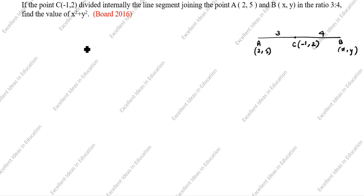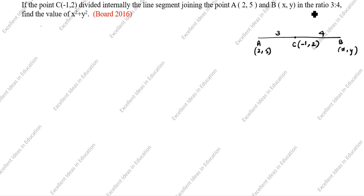Now we will find X² + Y². First we will find X and Y, and after that we will find the X² + Y² value. The ratio 3:4 means M1:M2, so we will use the section formula.